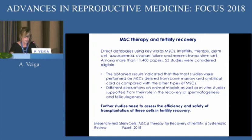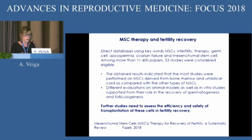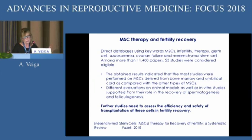The conclusion from a review of mesenchymal stem cell therapy for recovery of fertility — comprising 53 papers — states that further studies are needed to assess the efficacy and safety of transplantation of these cells in fertility recovery, both in the male and female. The results indicate that more studies were performed on mesenchymal stem cells obtained from bone marrow and umbilical cord, and they might have a role in recovery of both spermatogenesis and folliculogenesis.